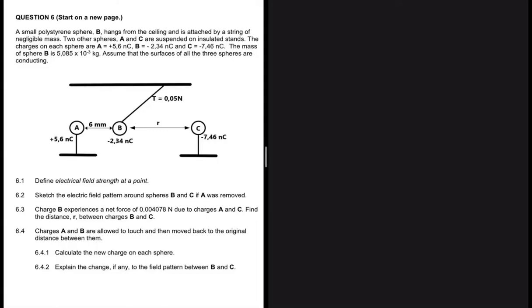Define electric field strength at a point. This definition is actually different from electric field. What does electric field strength at a point say? It says that the electric field at a point is the electrostatic force experienced per unit positive charge placed at that point. That is electric field strength at a point, totally different from just electric field.